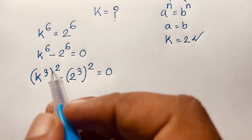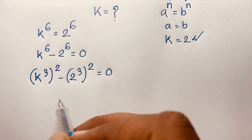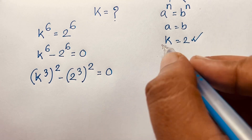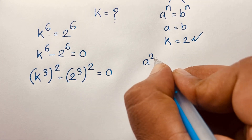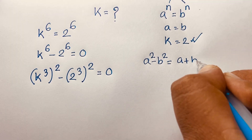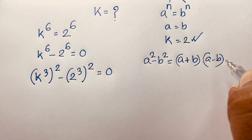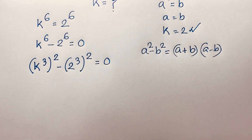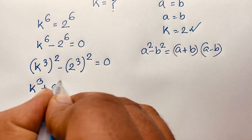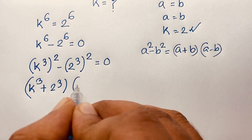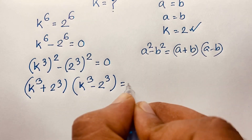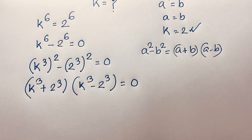Now, using the identity a squared minus b squared equals (a + b)(a − b), we apply this formula. It becomes: (k to the power 3 plus 2 to the power 3) times (k to the power 3 minus 2 to the power 3) is equal to 0.